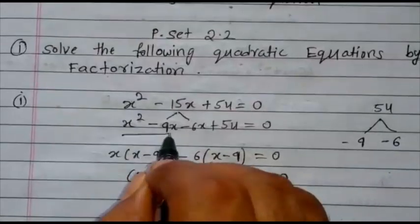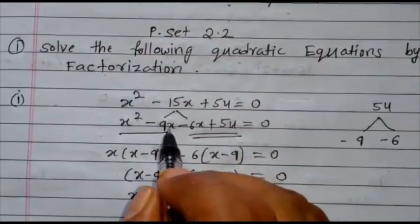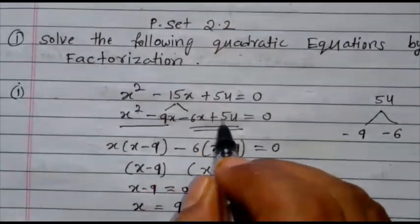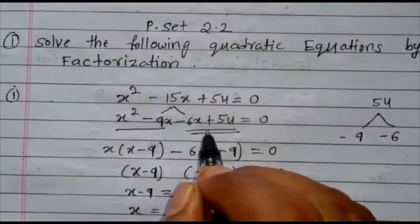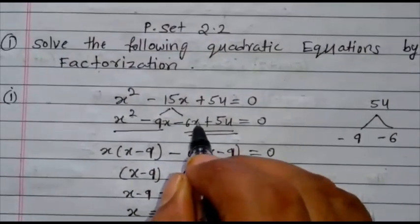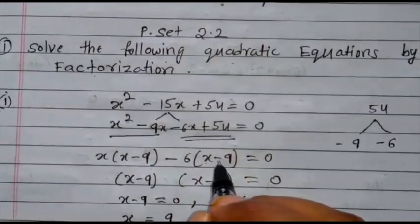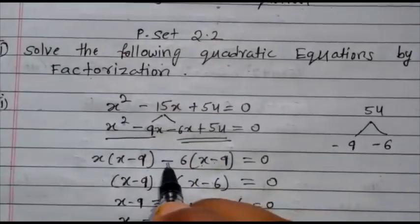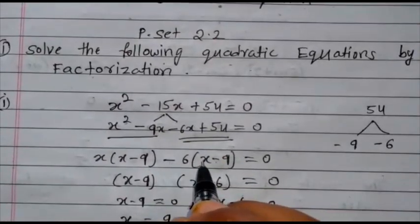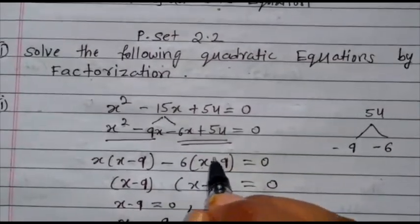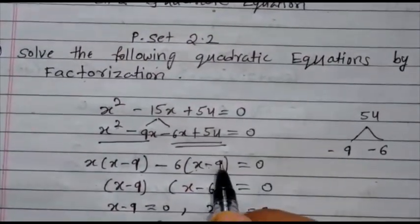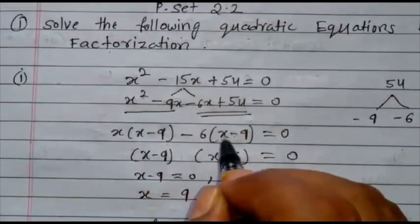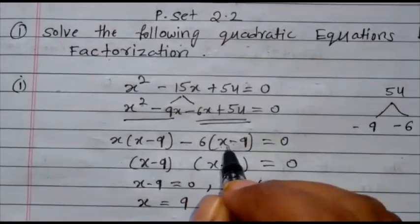Now make the pairing. This is the first pair, this is the second pair. What is common here? x. Write x, and what is left? x minus 9. What is common in the second pair? With the minus sign — write minus 6. What is left? x minus 9. We can check here — both give x minus 9, so the factorization is correct.